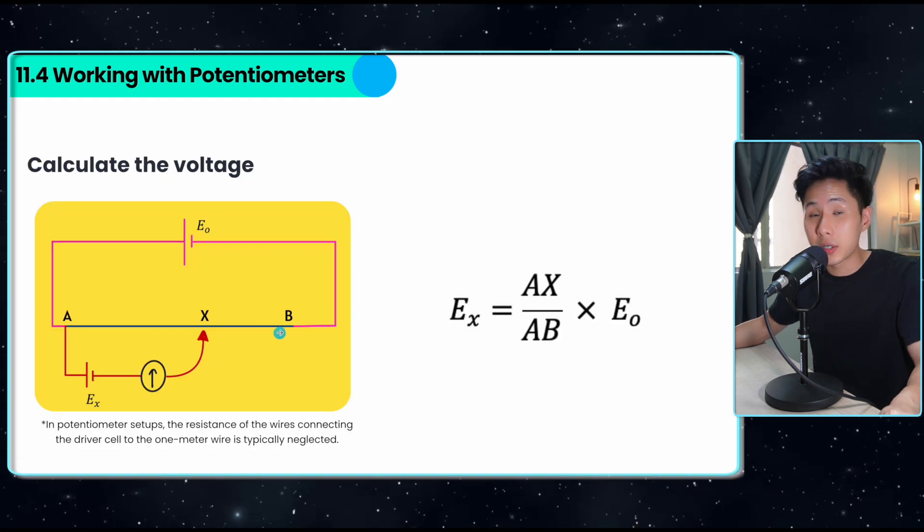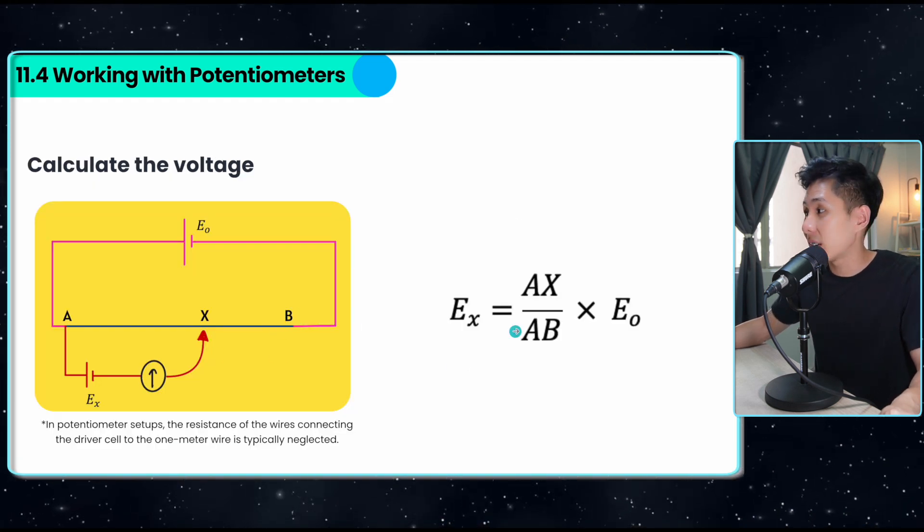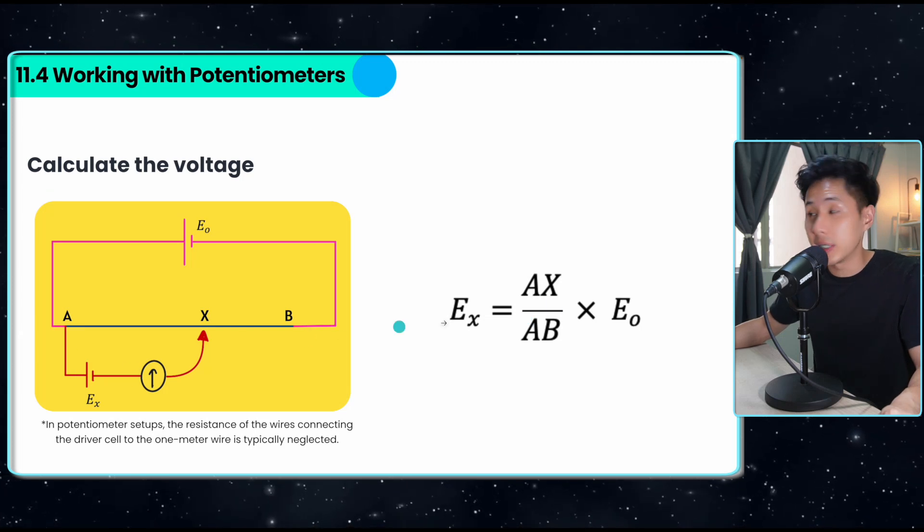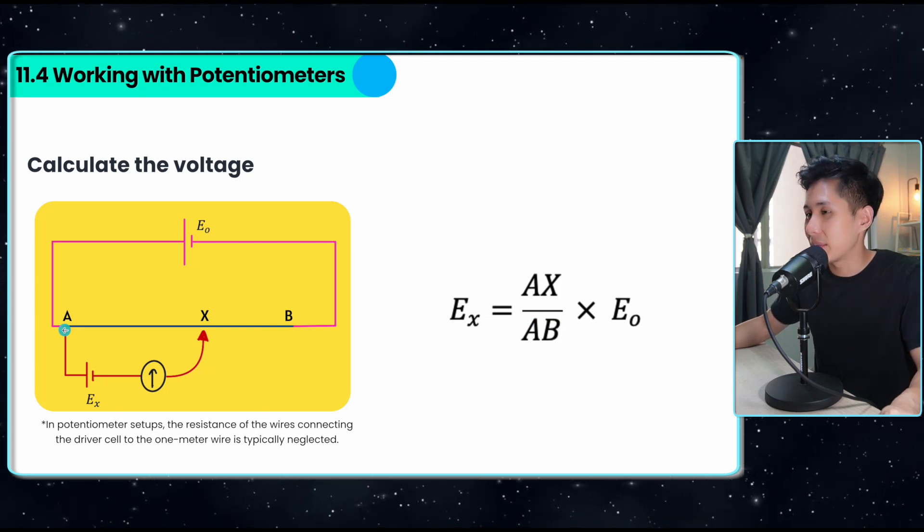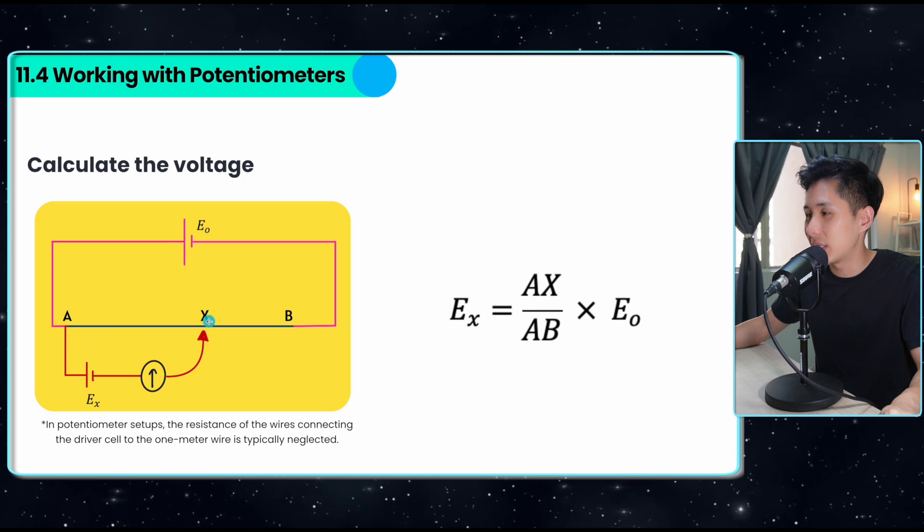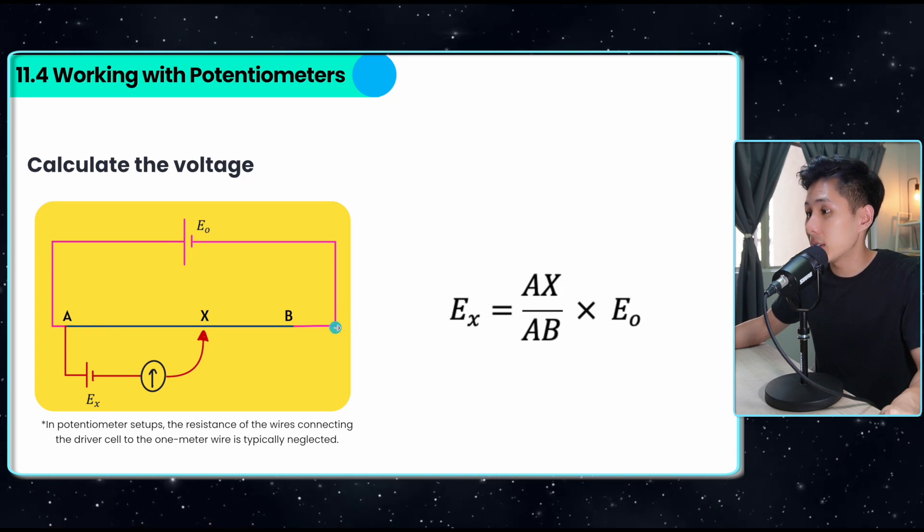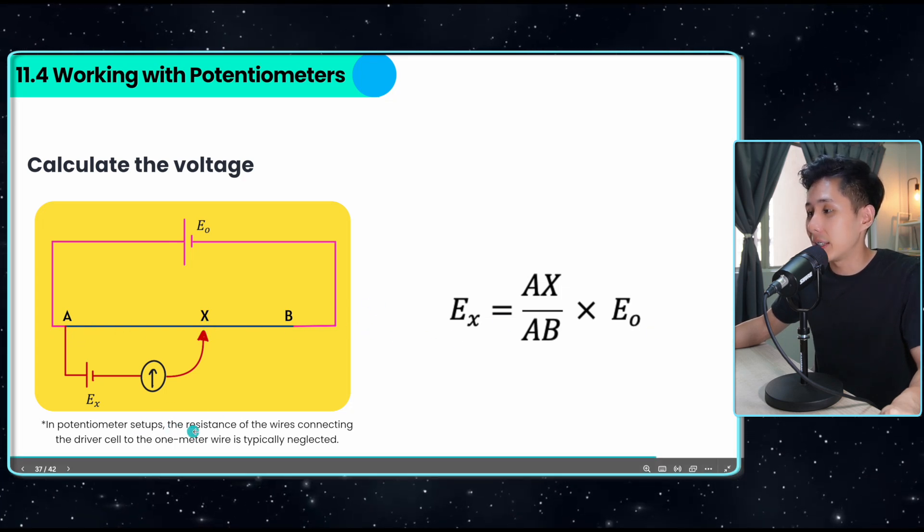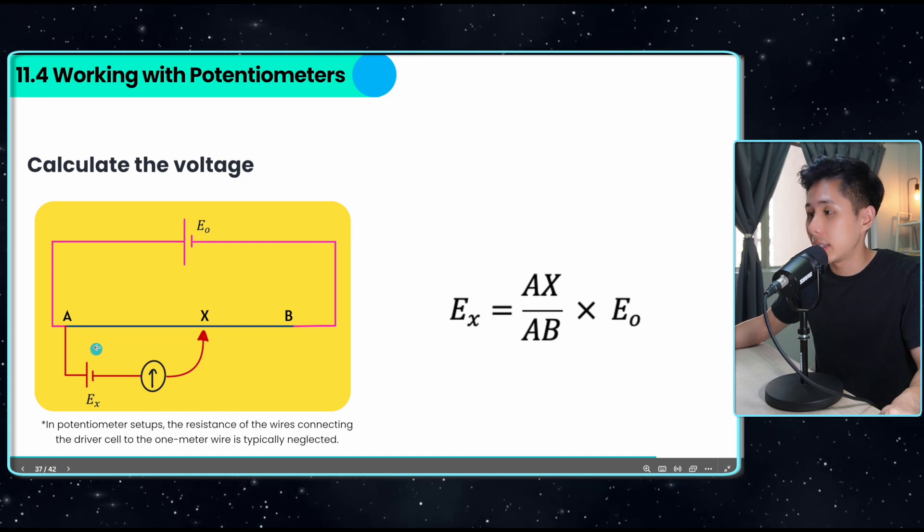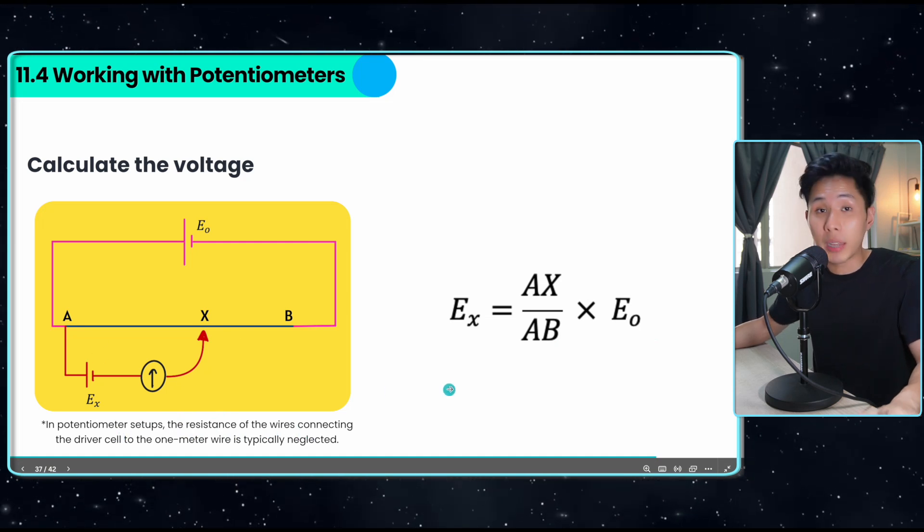Once the null condition is achieved, we can then calculate the voltage of this cell using this equation. AX is the point which the jockey touches and AB is the length of the wire. In this case, the resistance of the wire connecting here is typically neglected. We don't care about it first.